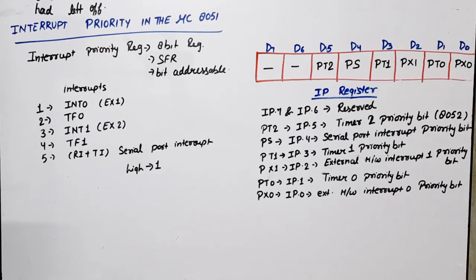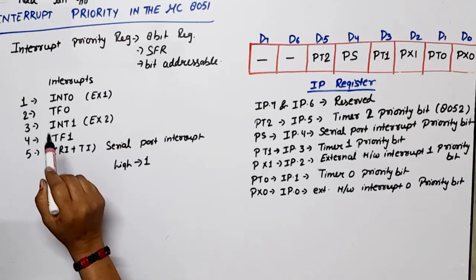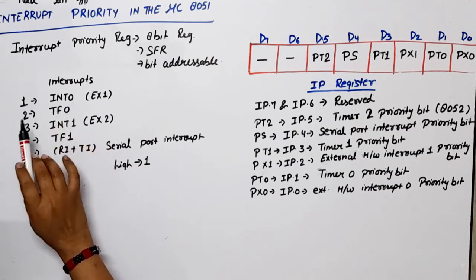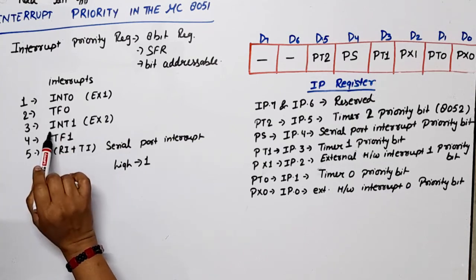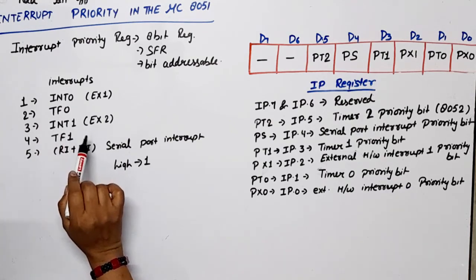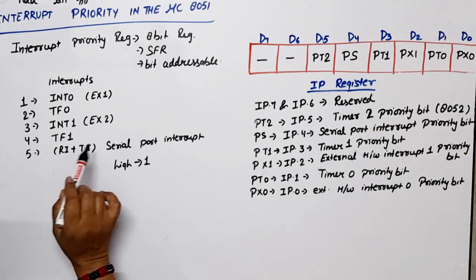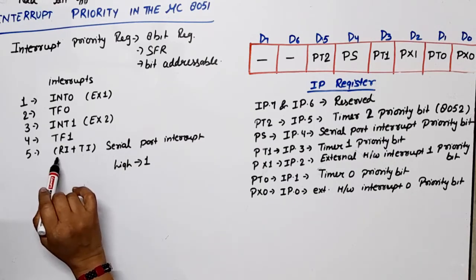First, what is our priority requirement? Suppose if we have one or two interrupts occurring, then who will get access first? It depends on the priority of interrupts — whichever has the highest priority will be serviced first. When power is on in the 8051 microcontroller, the default sequence is: highest priority is INT0 (external hardware interrupt 0), second is TF0 (timer 0 interrupt), then INT1 (external hardware interrupt 1), fourth is timer 1 interrupt, and fifth is the serial port interrupt, written as RI plus TI, used for both receiving and transmitting.